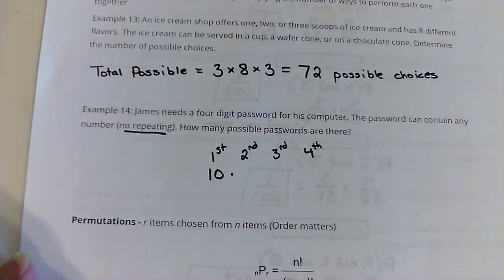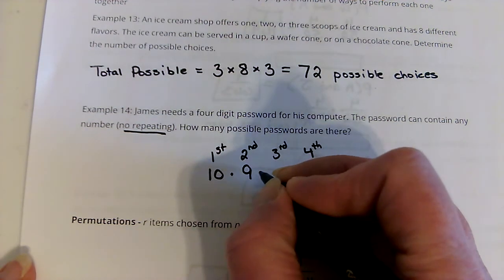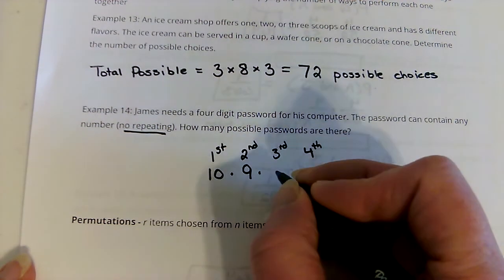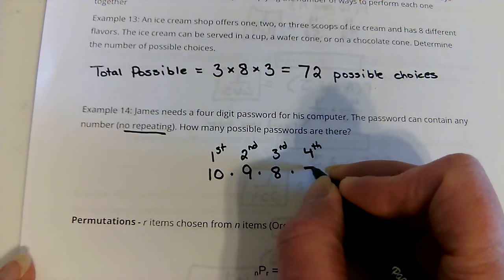Now on the second one they said no repeating, so if something was used on the first one we can't use it on the second one, so that means there's nine there. Then there'd be eight and then there'd be seven.